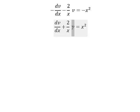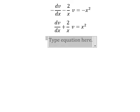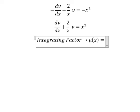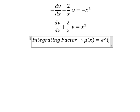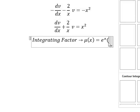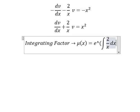Next we have v and first derivative of v, we can use integrating factor. So we need to find μ(x) equals e to the power of the integral 2 over x dx.